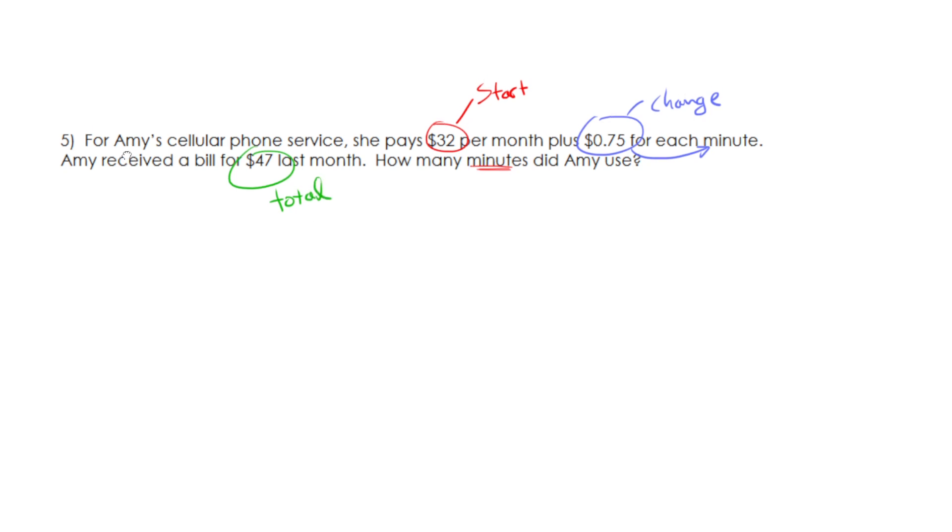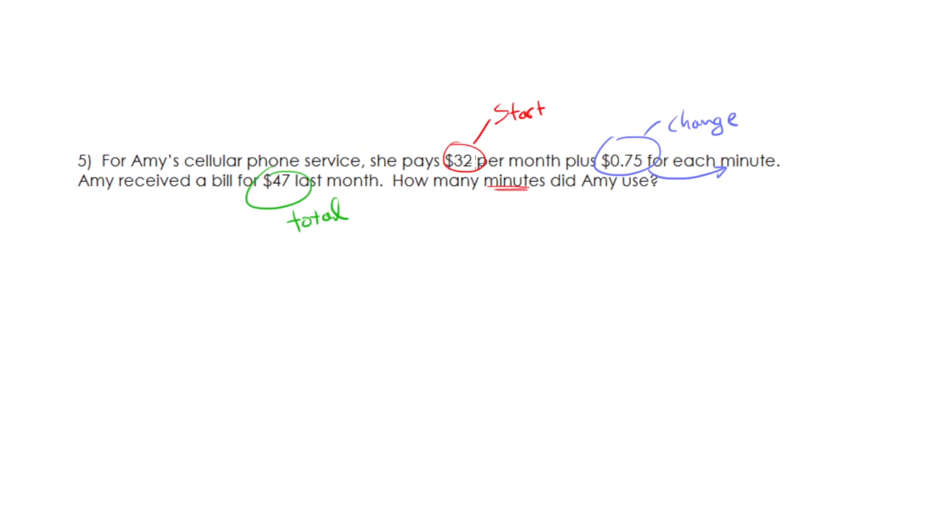So for Amy's cellular phone service, she pays 32 per month. That's each month she pays 32 plus 75 cents for each minute. So we're going to take 75 times the number of minutes and I'm going to call minutes x. That's what I'm going to do. Let's build this equation.